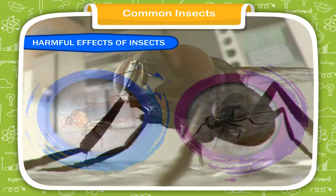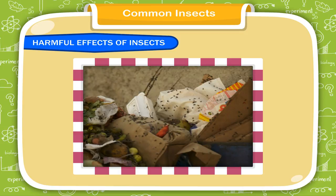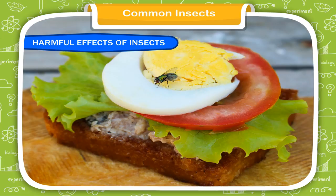Cockroaches and houseflies do not bite, but they carry a lot of germs and dirt on their body. Houseflies come from outside, sit in dirty places like garbage, and pick up all types of disease-causing germs. They come inside the house and sit on food. The germs make the food unhealthy, and when this food is consumed, it causes intestinal and other serious diseases.